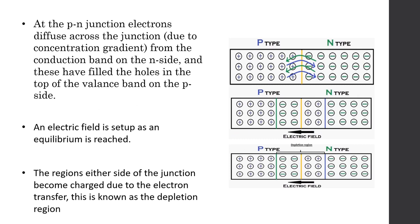At the P-N junction, electrons diffuse across the junction due to a concentration gradient from the conduction band on the N-side, and these fill the holes in the top of the valence band on the P-side. An electric field is set up as equilibrium is reached. The regions either side of the junction become charged due to the electron transfer. This is known as the depletion region.